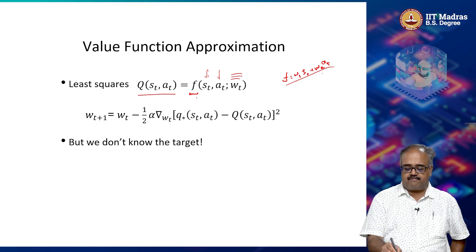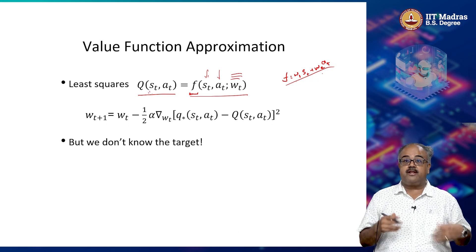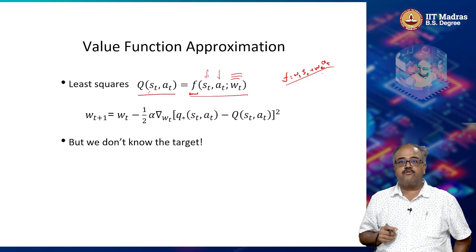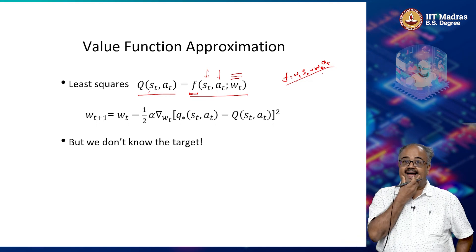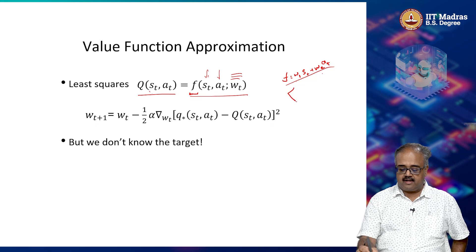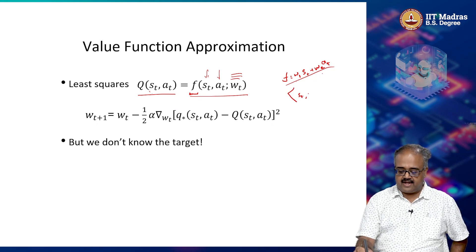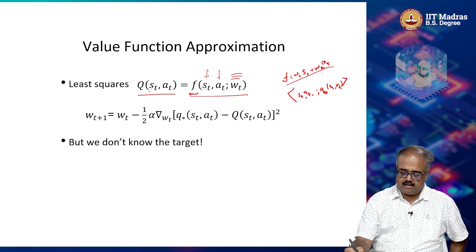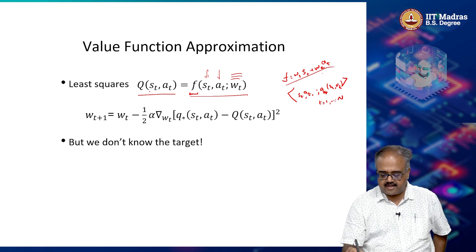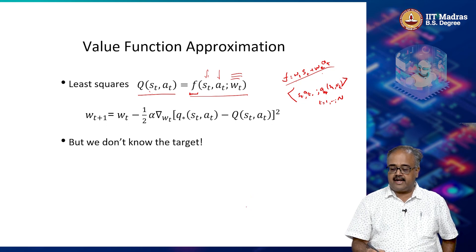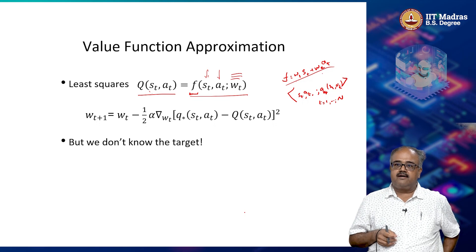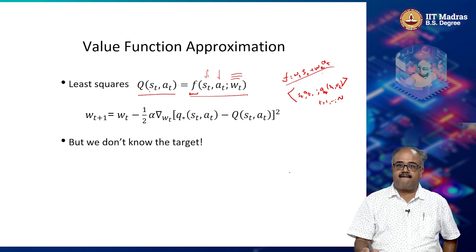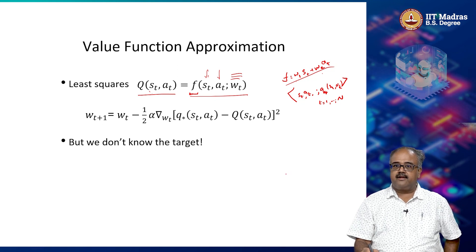Once I have a function like this, f is supposed to approximate Q. Q-star is what I am trying to learn in Q-learning or SARSA. My f is supposed to approximate Q-star. In a normal least squares regression problem, I will have pairs: s_t, a_t and then my target will be Q-star of s_t, a_t. For t equal to 1 to n, I will have n sample pairs of (s_t, a_t, Q-star(s_t, a_t)) as training data, and I do a least squares fit.